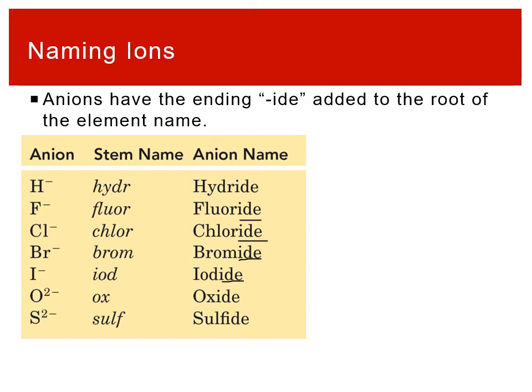There aren't a lot of anions because it's only the nonmetals. You'll get comfortable knowing that it's hydride, oxide, sulfide, iodide, bromide, those kinds of things. One of the things to note is that there are no variable anions. When we talked about variable charge, it was all metals. Anions are consistent, so you don't ever need Roman numerals with anions.